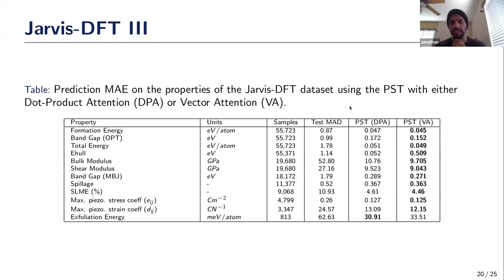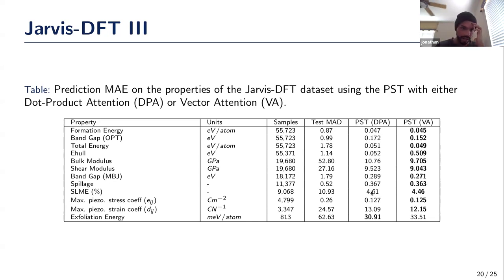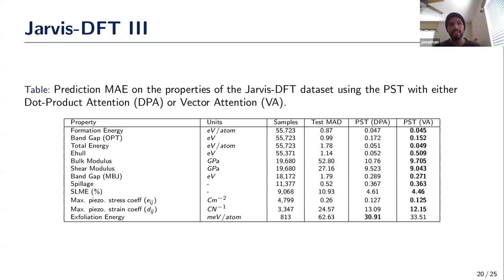We also compared the two attention mechanisms. The previous experiments used dot product attention, which is more efficient but less accurate. As shown here, except for exfoliation energy, vector attention significantly produces more accurate results. However, the vector attention version took between 1.5 and 2 times longer to train, and inference time was about 1.3 times as long — a non-negligible increase in computational effort, but an option when extra accuracy is needed.